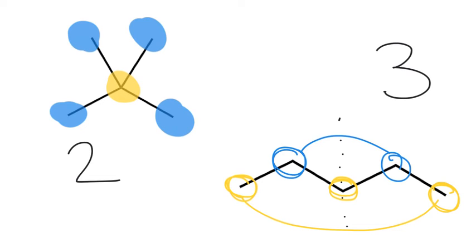Also worth noting: for 2,2-dimethylpropane, the central quaternary carbon identified there actually wouldn't register a peak on proton NMR, which is very important.